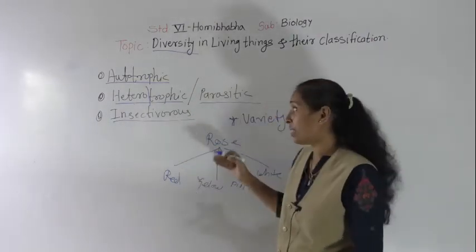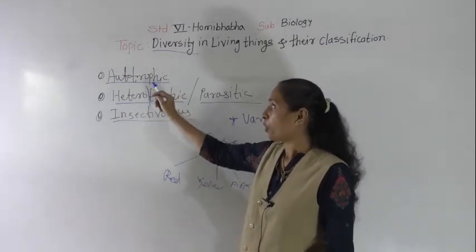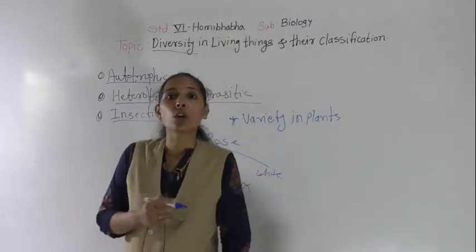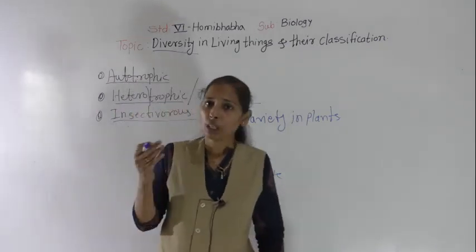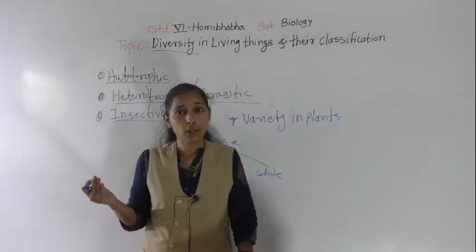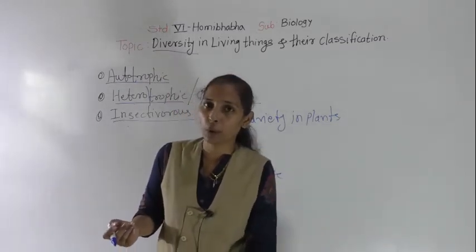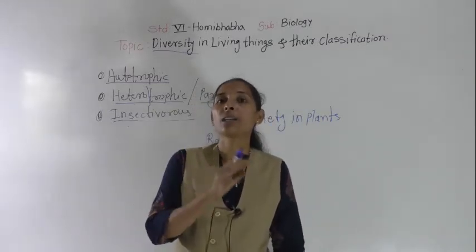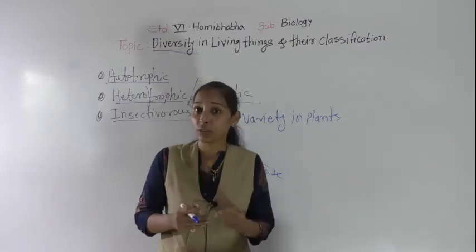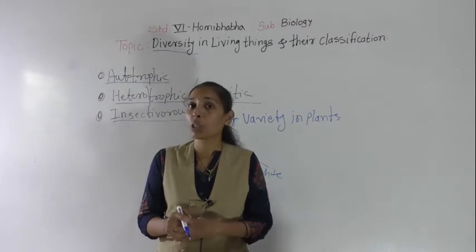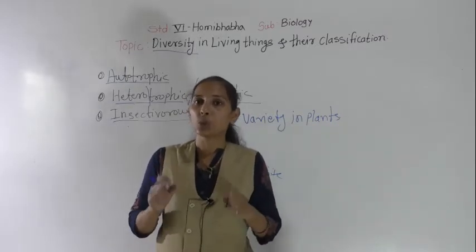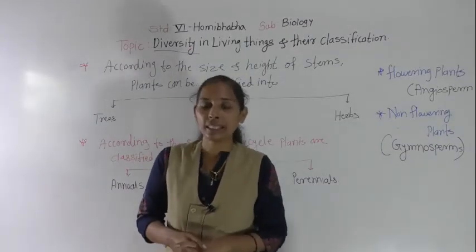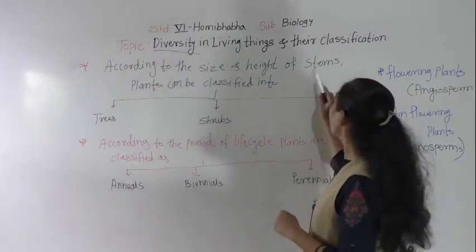Under feeding habits, plants are classified into three types: autotrophic, heterotrophic, and insectivorous plants. Now the next classification of plants is on the basis of their size and observation, and also on the basis of the nature of their stems, roots, and branches. Let's discuss this classification of plants.